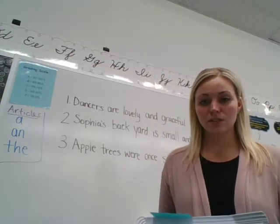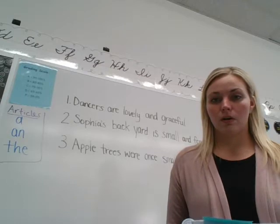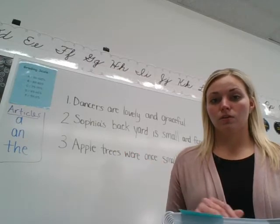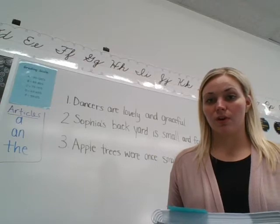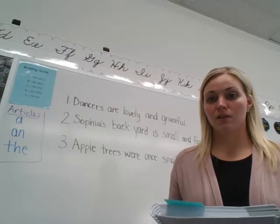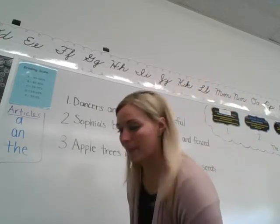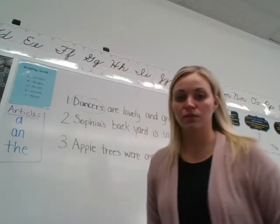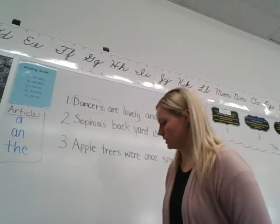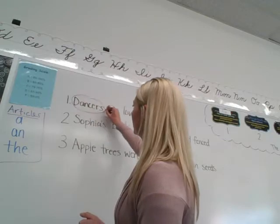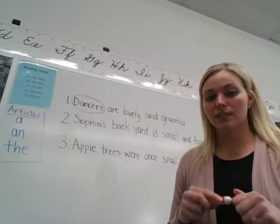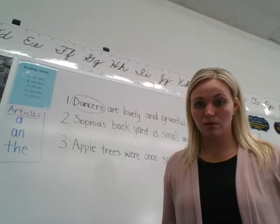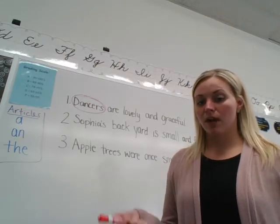Number one: 'Dancers are lovely and graceful.' Go ahead and circle your nouns in that sentence. Remember, our nouns are person, place, or thing. So if the word is not a person, place, or thing, then you cannot circle it for your noun. Pause me and circle your nouns. You should have circled 'dancers' for your noun. Dancers are people, and you should notice that dancers is also the subject of your sentence. Nouns are person, place, or thing, but they're also usually what the sentence is about — that would be the subject.